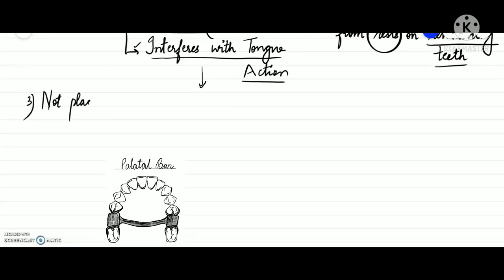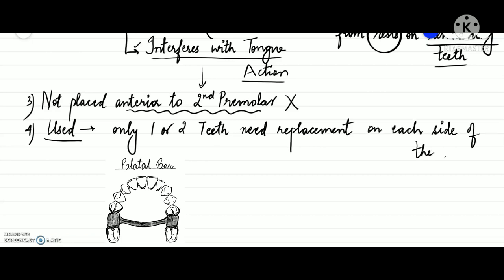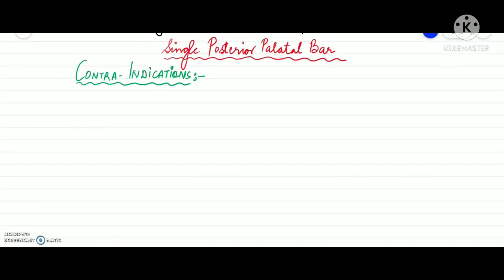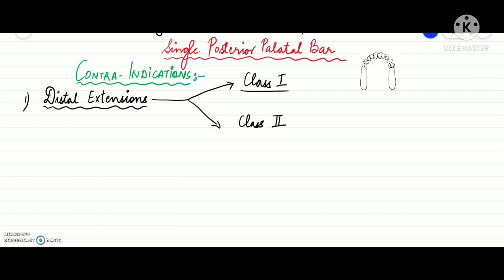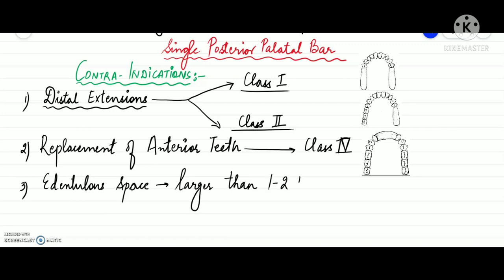Another disadvantage is that because it interferes with tongue action, it cannot be placed anterior to the second premolar. Its use is also limited to cases where only one or two teeth need to be replaced on each side of the arch. Contraindications include: it should never be used in cases involving distal extensions — that means class 1 or class 2; it cannot be used for replacement of anterior teeth — Kennedy's class 4; and it should not be used where the edentulous space is larger than one to two teeth.